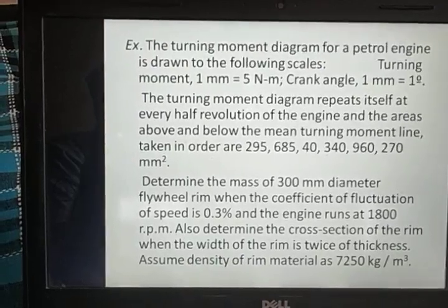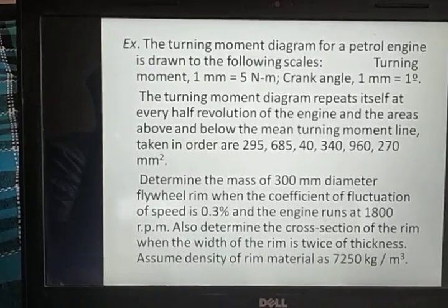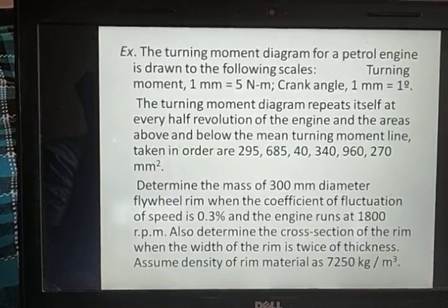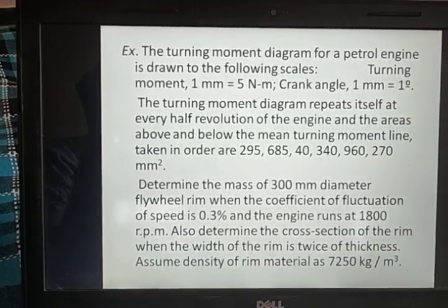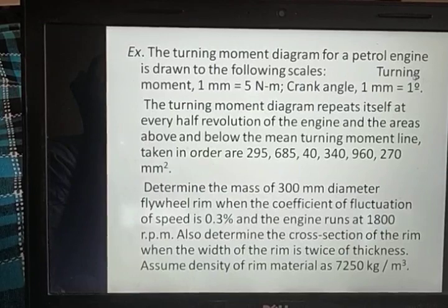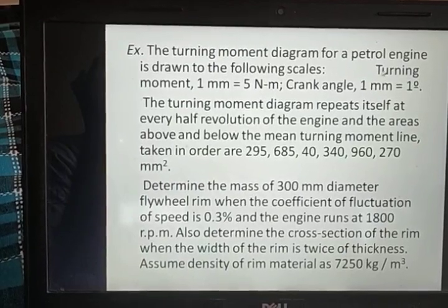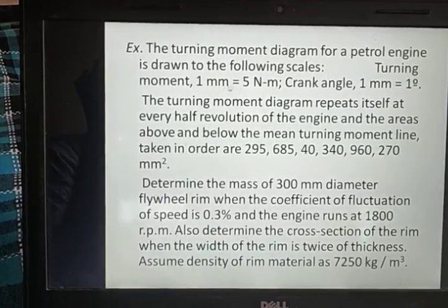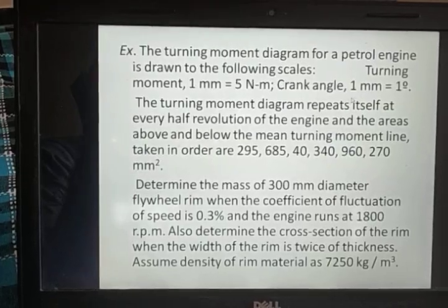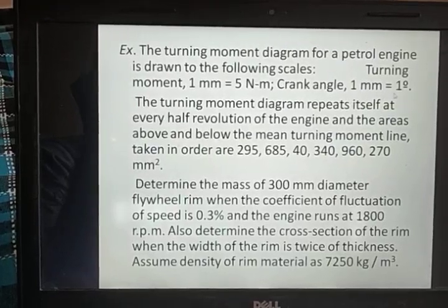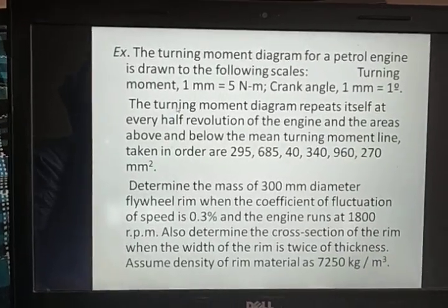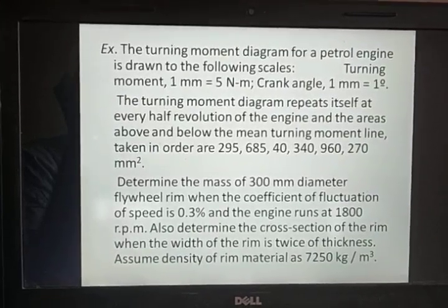Write down the problem. The turning moment diagram for a petrol engine is drawn to the following scale: turning moment 1 mm equals 5 Newton meter, and crank angle 1 mm equals 1 degree. This is the scale they have given us.